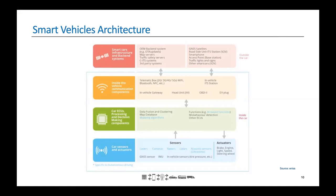When we move to communication, there are two types: in-vehicle communication and telematics, which includes cellular and satellite communication that transfers data back and forth between the vehicle and back-end servers. We'll be diving deep into these components in the upcoming slides.